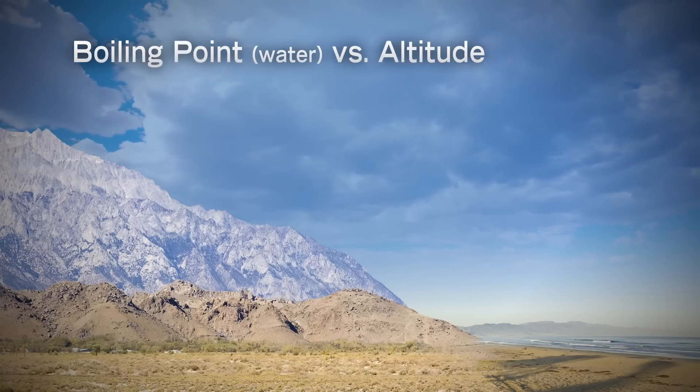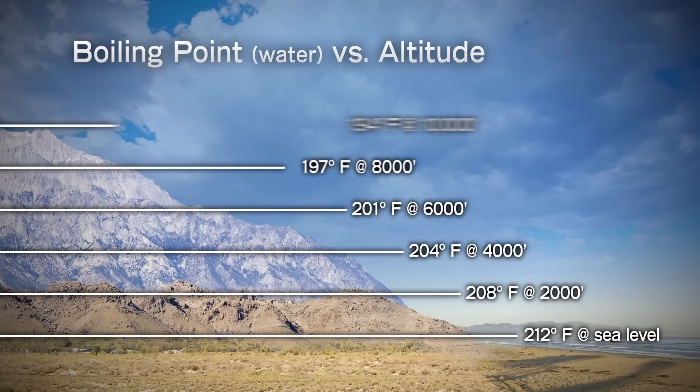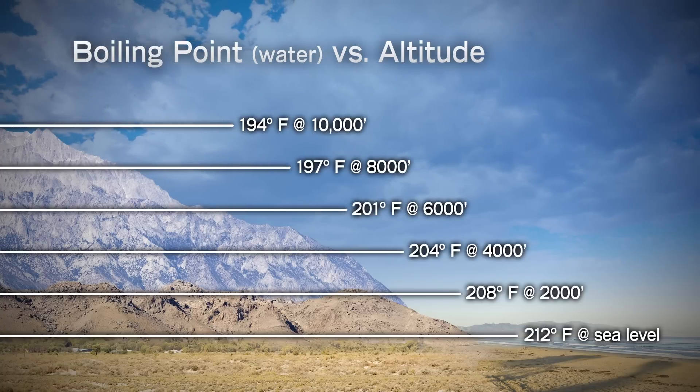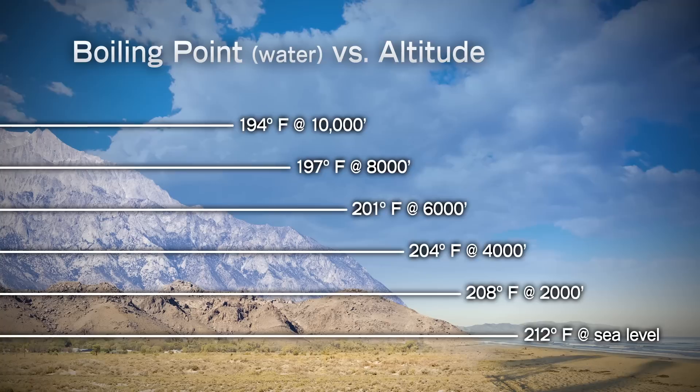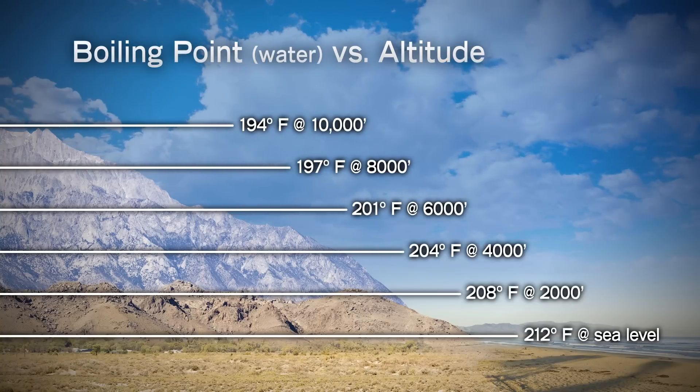At higher pressures, liquids boil at higher temperatures. At lower pressures, liquids boil at lower temperatures. This is why water boils at lower temperatures at higher elevations above sea level. The atmospheric pressure is lower, so the boiling point is lower.